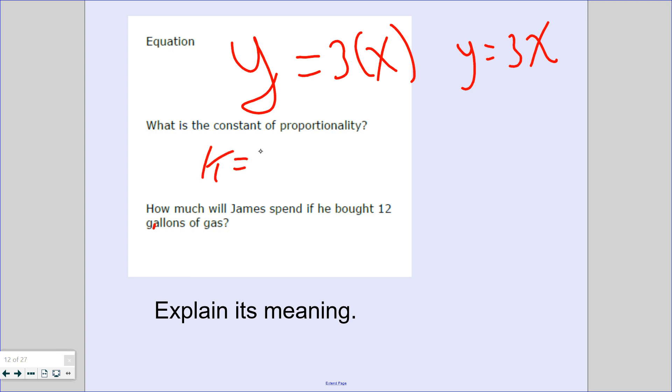So what is the constant of proportionality? Well, the formula is k equals y over x. So let's go back. He spent $15 on 5 gallons of gas, we divide that as 3. So explain its meaning. That means he spends $3 per gallon of gas. So how much will James spend if he bought 12 gallons of gas? So he spends $3 per gallon. So $3 times 12 gallons, he'll spend $36 per 12 gallons of gas. And that is constant of proportionality, which is just really unit rate.